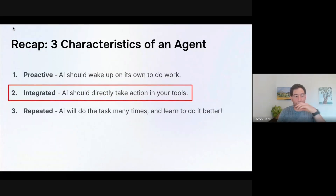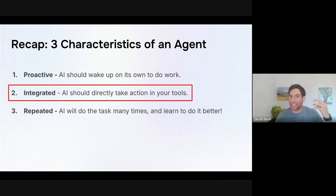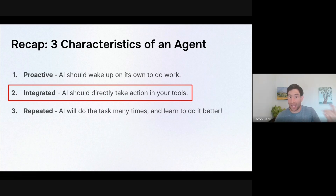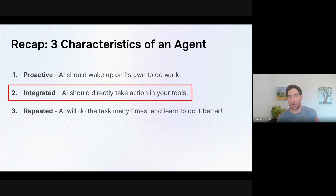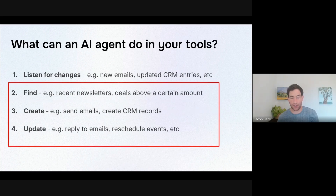Remember, we talked about the three characteristics of an AI agent. It's proactive — it wakes up on its own to do work. It's integrated — it takes action directing your tools. And it's repeated — it can do the task many times and learn to do it better. In the last session on triggers, we focused on the proactive element of AI agents, how they wake up to do work on your behalf. In this session, we're going to focus on the integrated element, how the AI is going to take action directly in your tools.